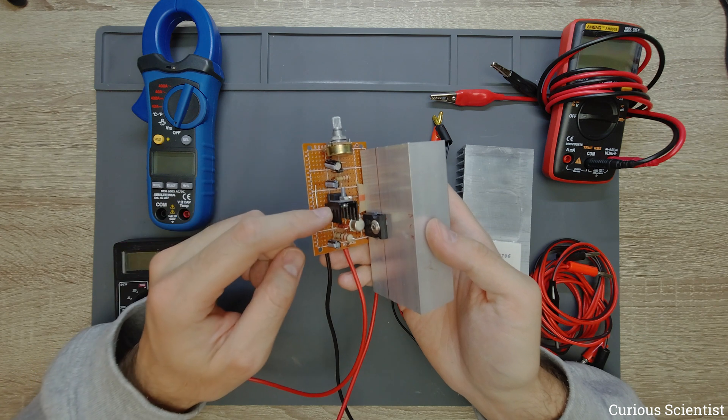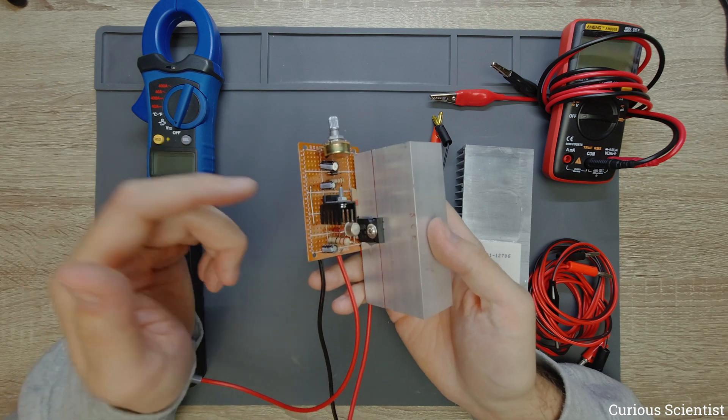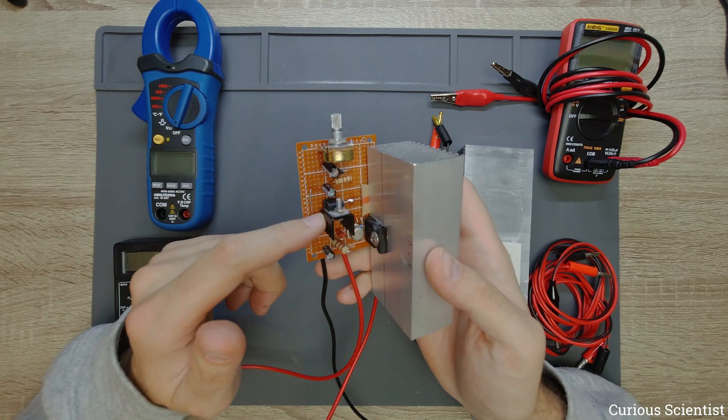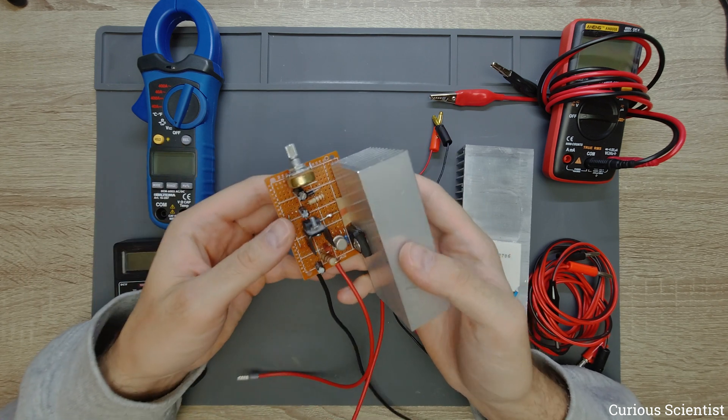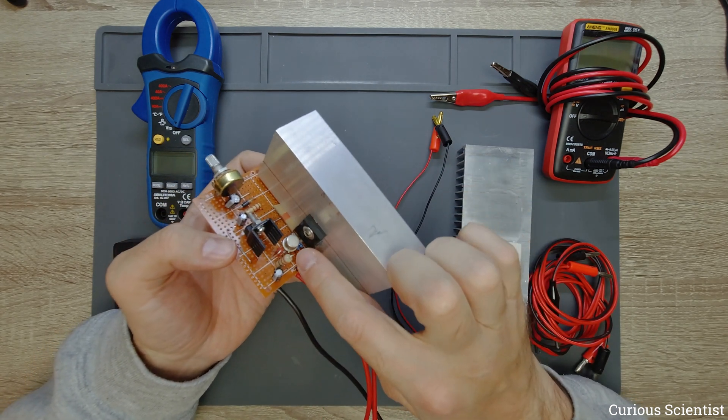Because of that you will need some cooling and I use a very simple cooling here because I will not use this as the main part of the circuit. But as you can see this part there are two other transistors.